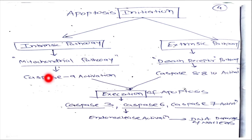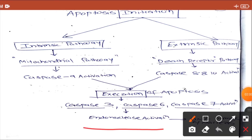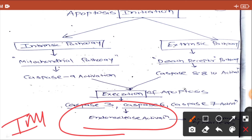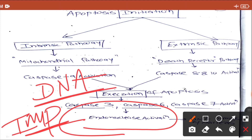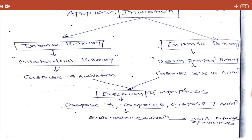Because of caspase 8, 10, and 9 activation, you will finally have execution of apoptosis. In the execution phase, you will have caspase 3, 6, or 7 activation. Because of this caspase activation, you will have endonuclease activation — a very important step. Endonuclease will break the DNA, causing nuclear DNA damage, and finally you will have pyknosis of the nucleus.